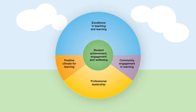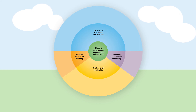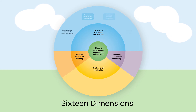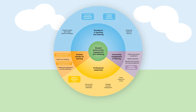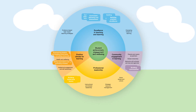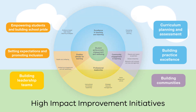Each priority area is made up of four dimensions to delve more deeply into how they improve student outcomes. There are 16 dimensions in total. Evidence shows that out of all 16 dimensions, these six have the highest impact. We call these six high-impact improvement initiatives, and we're recommending that schools focus their efforts and resources on one or two of these.